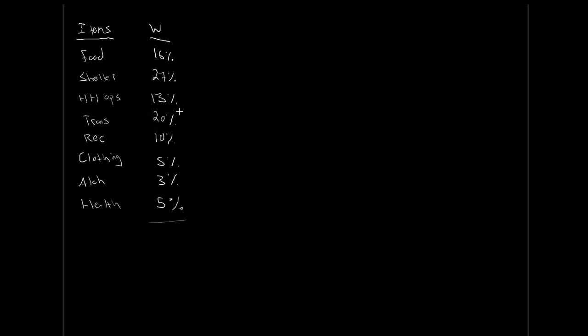These weights don't quite add up to 100% because they've been rounded for display. In reality, each category might be something like 13.49% or 20.49%, and rounding causes a small shortfall. The idea is that Statistics Canada holds these weights constant and tracks how the price of each category changes over time.